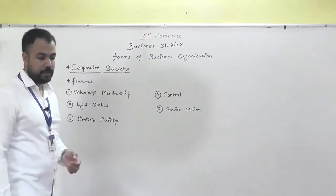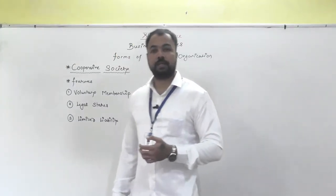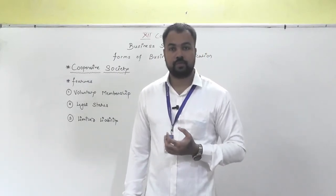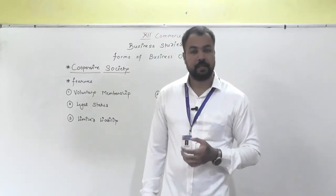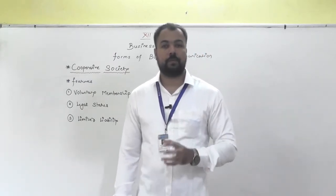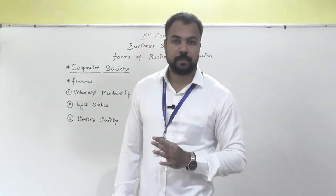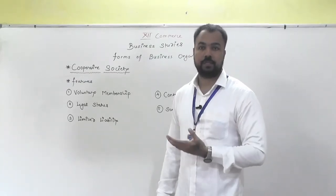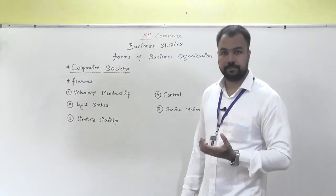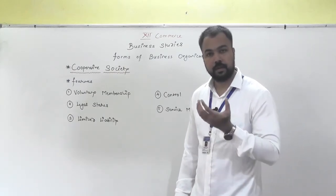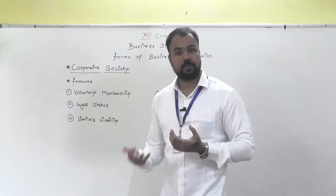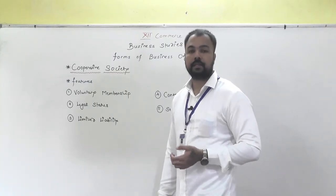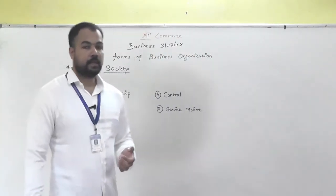So to summarize about cooperative society: it is a voluntary association; at least 10 people should come together to form or establish a cooperative society; and it must be registered under the Cooperative Societies Act 1912. The main motive of this society is to help and to cooperate with each other. So this is the form in which 10 people voluntarily come together to establish their society under Cooperative Societies Act 1912.